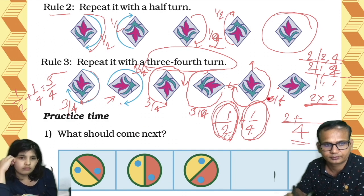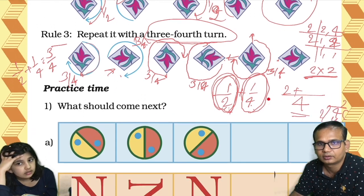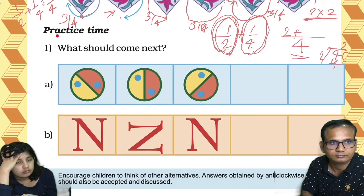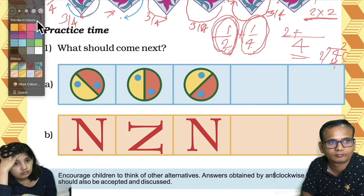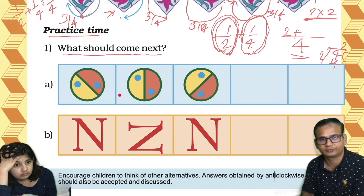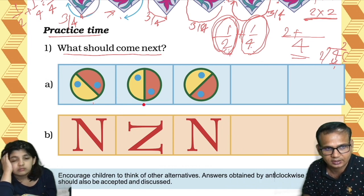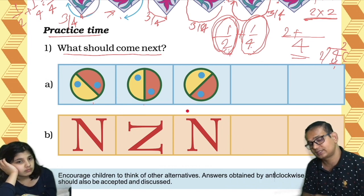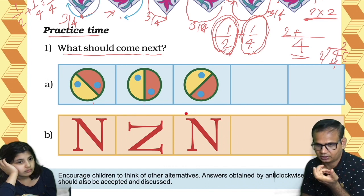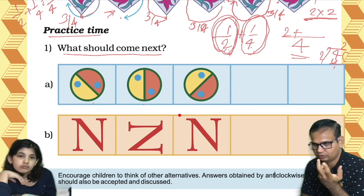Have you understood this? Yes. Shall we go ahead? Yes. Now practice time! What should come next? Tell me — what should come next? First, look at this image and the second one. First you need to see how much it is turned — whether it is turned quarter, half, or three-fourth.